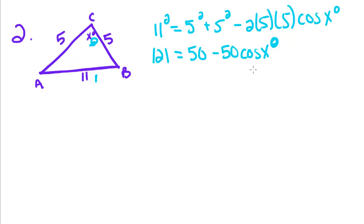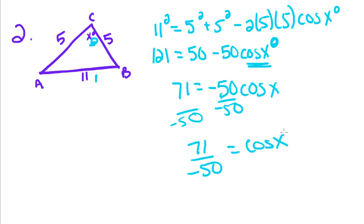So now what we're going to do is we're trying to solve for this. So we're going to subtract 50 over, and you'll get 71 is equal to negative 50 cosine of X. We're going to divide the 50 over, and we're just going to leave it as a fraction for now: 71 over negative 50 equals cosine of X.